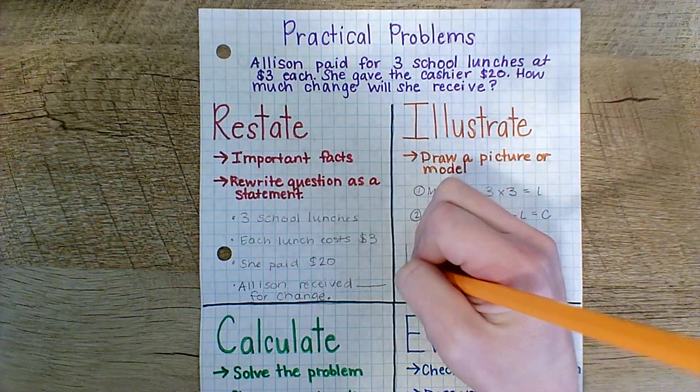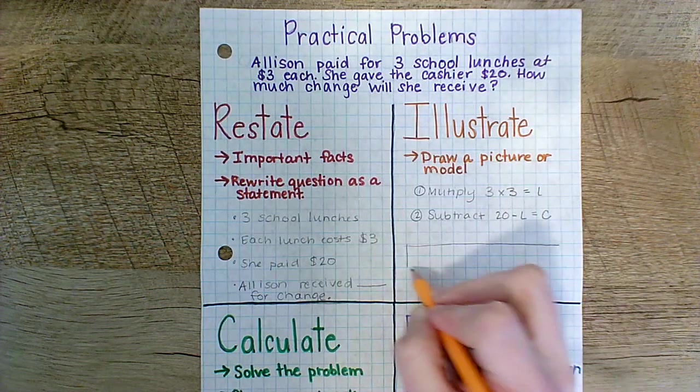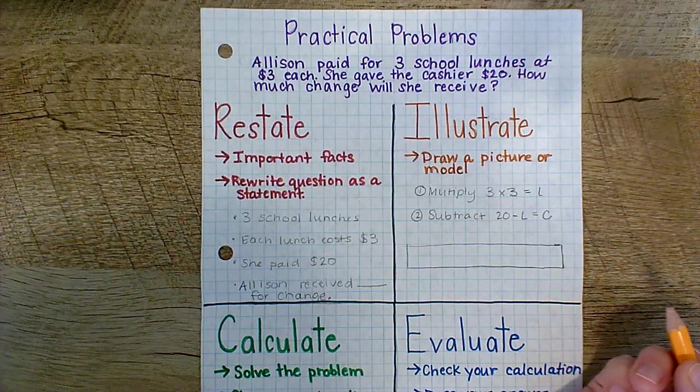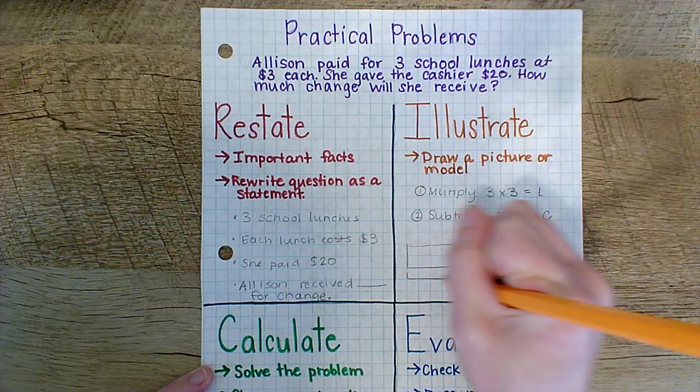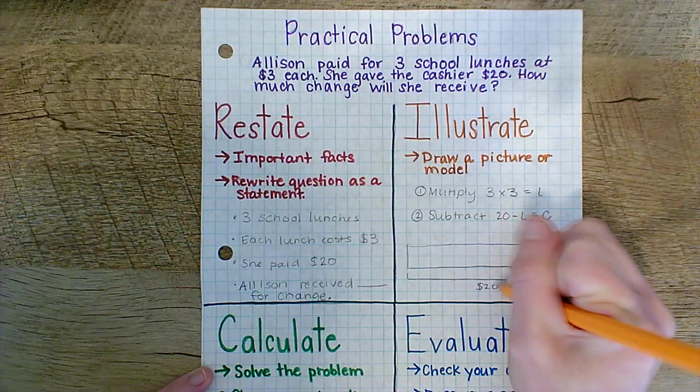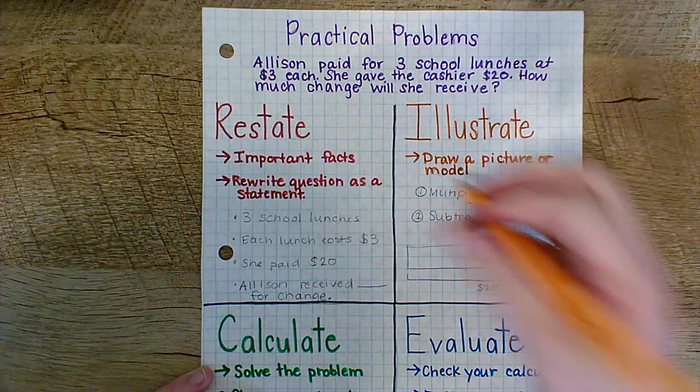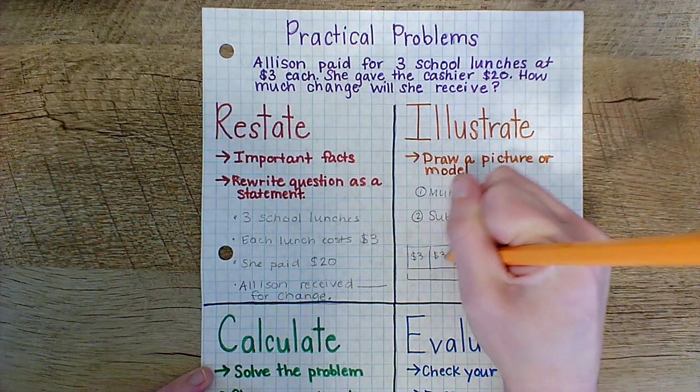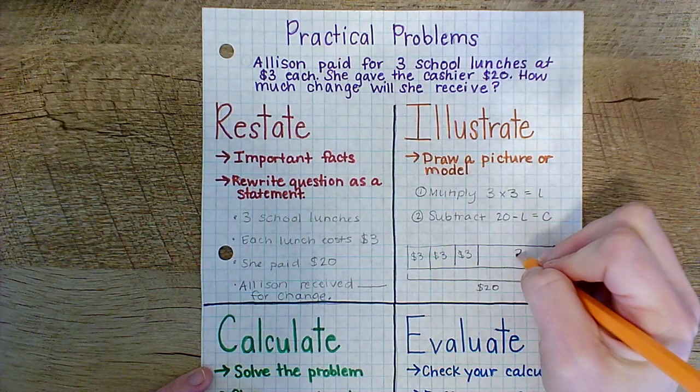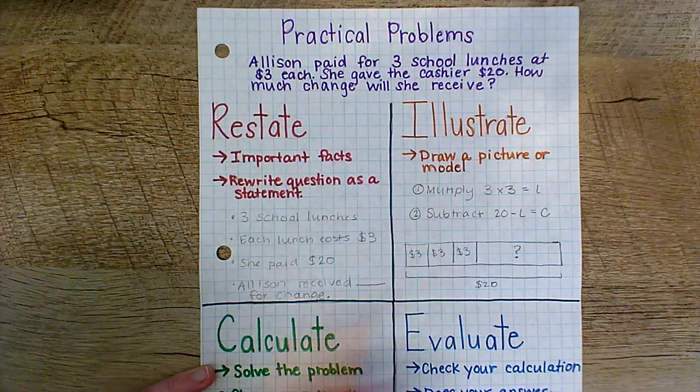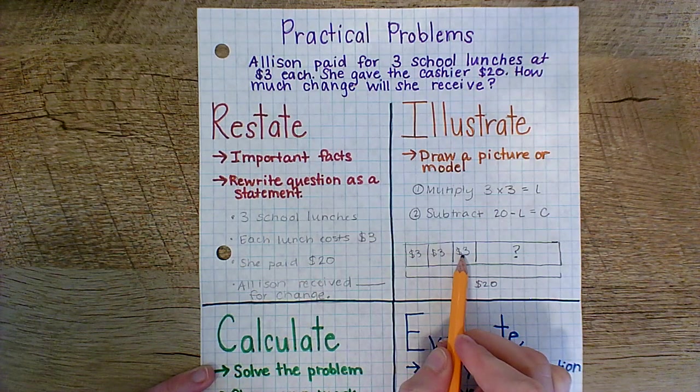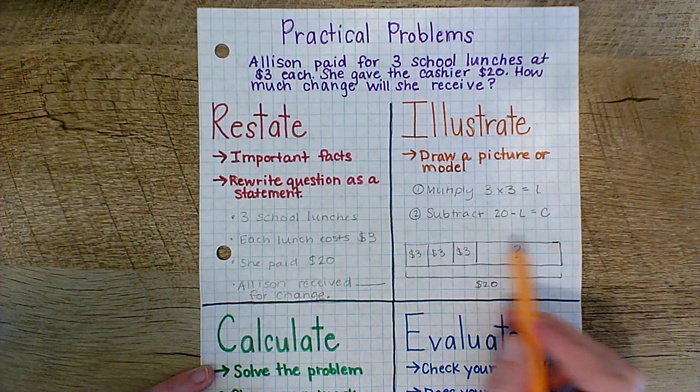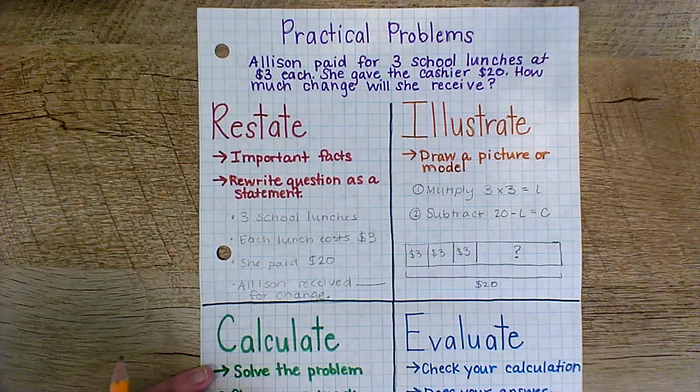I'm going to use a bar model for this one. So if I use a bar to represent the whole, which is going to be how much money Allison paid the cashier. So I know that all of this is going to be equal to twenty dollars. I also know that she bought three school lunches for three dollars each. But I don't know how much change she got back. So this helps show that I'm going to do three times three. And then whatever that product is, I will subtract it from our whole of twenty dollars paid to the cashier. And then we will be able to figure out this missing number of how much change she will get back.